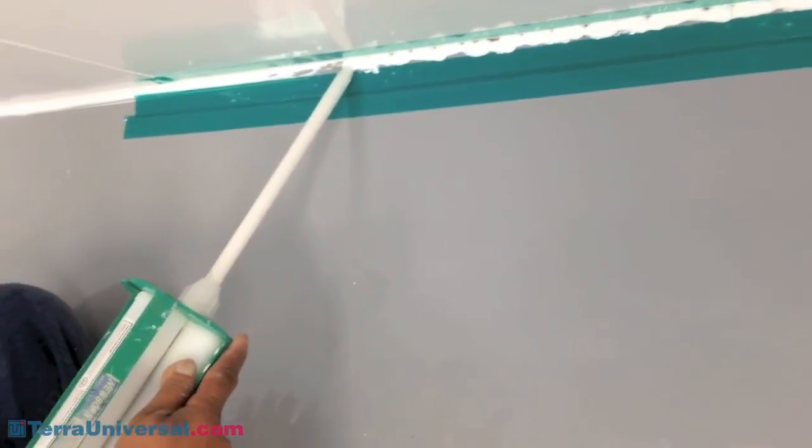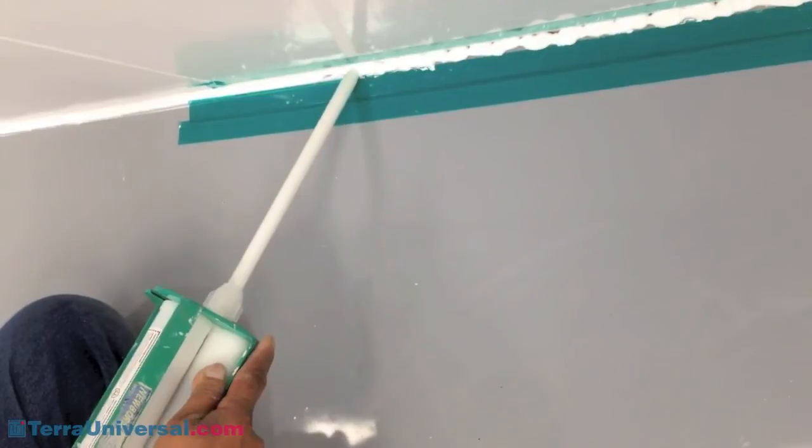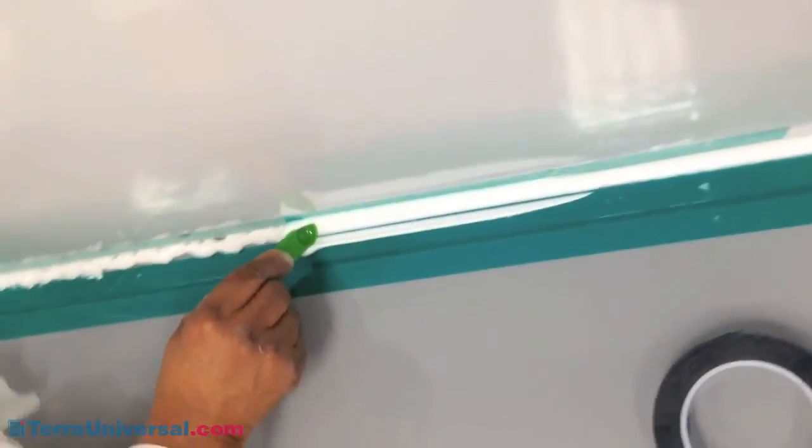Don't forget to apply seam treatment around all fixtures including air vents, utility hookups, window frames, and outlets.